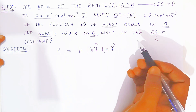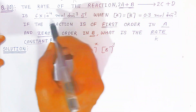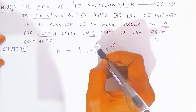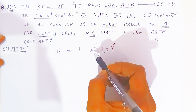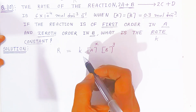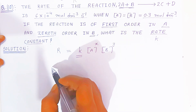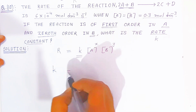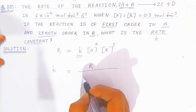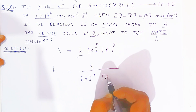Now, the concentration value is given as 0.3 mol per dm³, the rate of the reaction is also given, and the order — x and y — is already given. Just put in the values and find k. If you want to find k, you divide the whole equation by the concentration terms: k equals R divided by [A]^x times [B]^y.